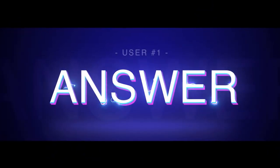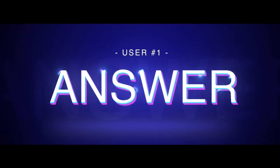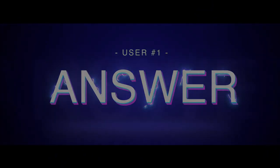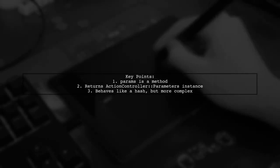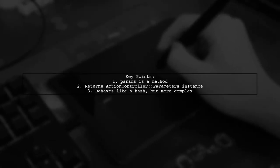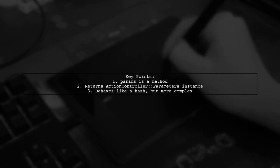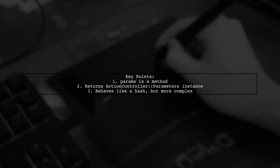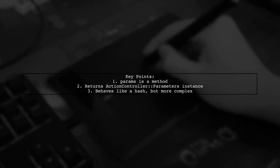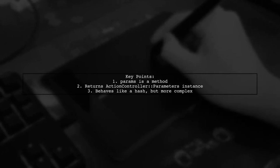Let's now look at a user-suggested answer. In Ruby on Rails, params is a method that returns an instance of ActionController::Parameters. It acts like a hash, but is more complex. Also, in Ruby, methods are considered objects. For more details, check the link in the thread.